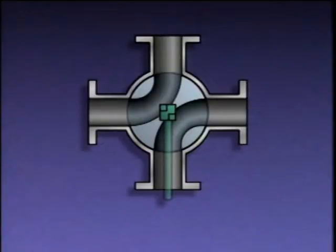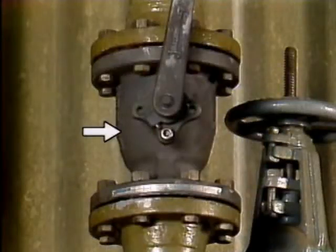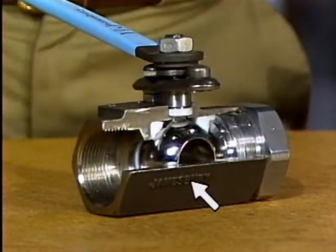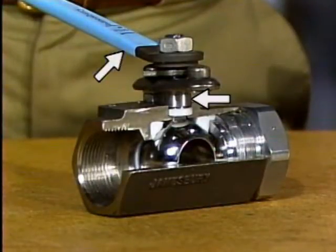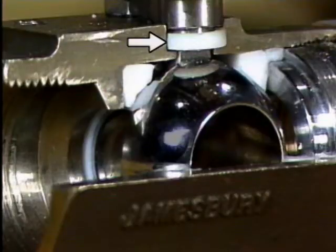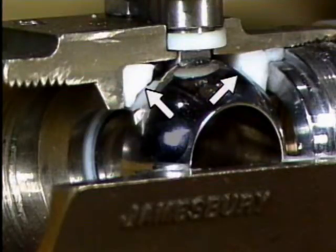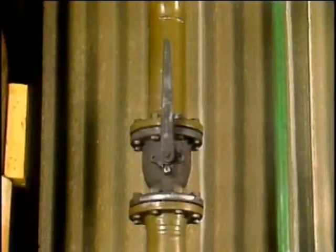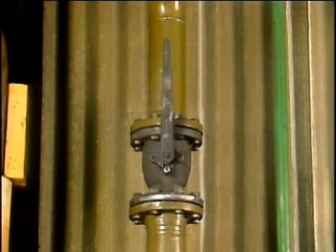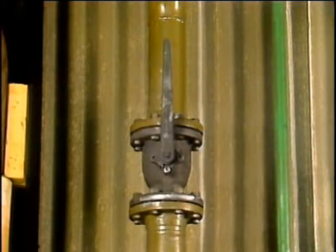Ball valves are commonly used for on-off purposes requiring fast valve positioning in process systems. A ball valve consists of a valve body, a stem with a handle, a ball with an opening straight through it, a seal around the stem to prevent leakage, and two ring-shaped seats commonly called wipers. A ball valve can be opened or closed by turning the handle one-quarter turn, and the handle is aligned with the opening in the ball so valve position can be determined by handle position.